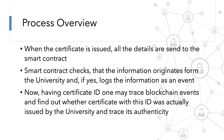This is a brief step-by-step process overview of the project. First, when the university issues the certificate, they have to send the student name, degree program, and certificate ID, and store it as a smart contract. The smart contract checks that the information originated from the university, and if yes, it logs the information as an event.